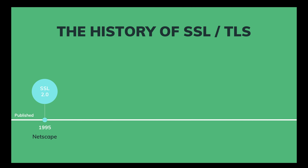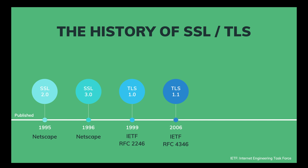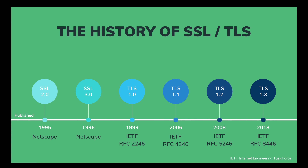SSL was originally developed by Netscape and first published in 1995 with version 2. SSL version 1 was never publicly released because of serious security flaws. In 1996, SSL version 3 was published as a complete redesign of the protocol. Then three years later, TLS 1.0 was first defined in RFC 2246 by IETF as an upgrade of SSL version 3. It took 7 years to upgrade to TLS 1.1 in 2006. TLS 1.2 came right after in 2008, and then finally after 10 years in the making, we got TLS 1.3 with huge improvements in 2018.